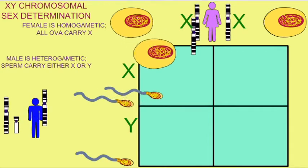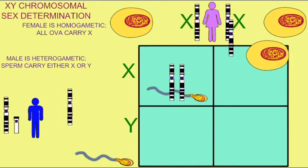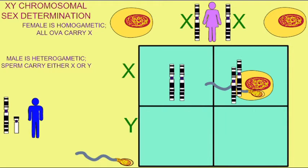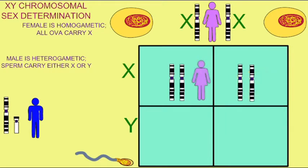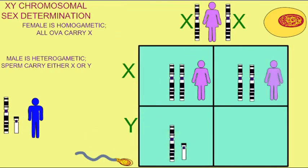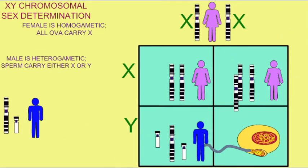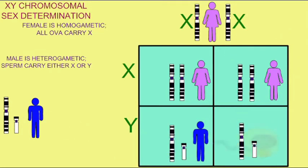Half of the sperm that they produce will bear an X chromosome, and half will bear a Y chromosome. The females receive two of the same chromosome — two Xs — therefore they are the homogametic gender. All ova will carry an X chromosome.